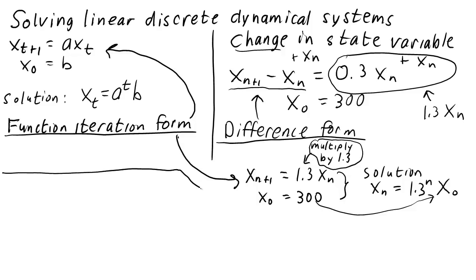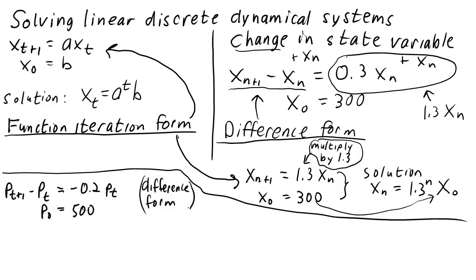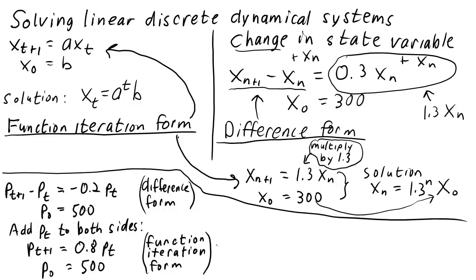Similarly, if we were modeling a population that started with 500 individuals and decreased by 20% in each year, we could come up with a dynamical system in difference form: p sub t plus 1 minus p sub t equals negative 0.2 p sub t, p0 equals 500, where p sub t is the population size in year t. To convert it to function iteration form, add p sub t to both sides: p sub t plus 1 equals 0.8 p sub t, p0 equals 500. The solution is p sub t equals 0.8 to the power of t times 500.